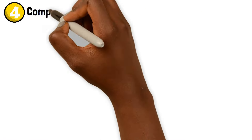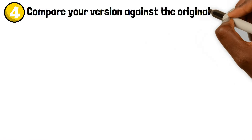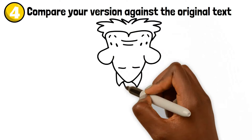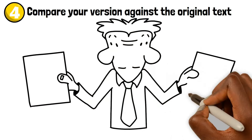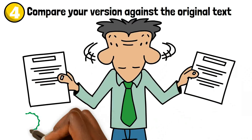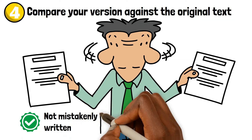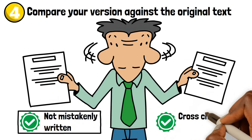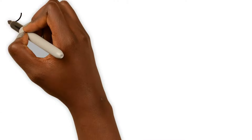Step number four: compare your version against the original text. This step is very important. Make sure you have not mistakenly written the same words from the original passage again. Also ensure that you cross check not to misinterpret the original meaning from the writer.